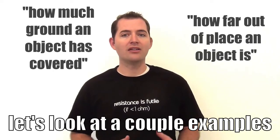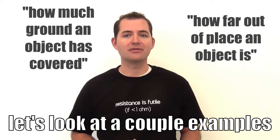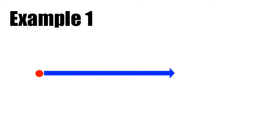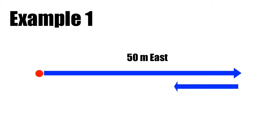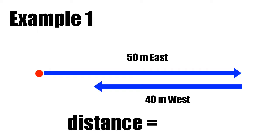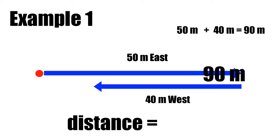Now let's look at a couple of examples. In this first example, let's say we have an object that's traveled from its starting point 50 meters east, turns around, and travels back 40 meters to the west. If we're talking about distance, or how much ground this object has covered, it's traveled a total of 90 meters.